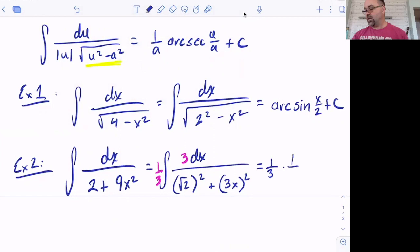Now that's nice because that means we have one third times the integral of du over a squared plus u squared. So that's one over a arc tan u over a plus c. So there we go. That's how these formulas can work.